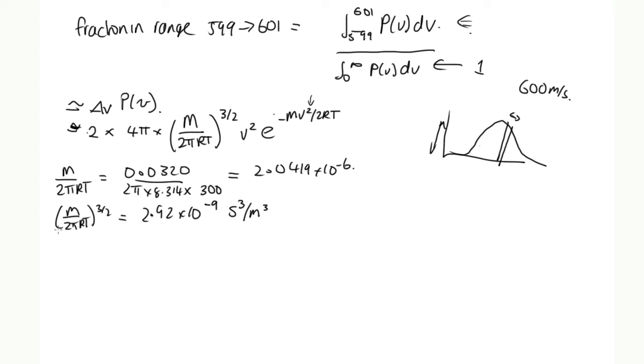And then let's work out what this term is. So mv squared over 2rt, that is equal to 0.0320 times 600 squared over 2 times 8.314 times t, which is 300. So that is equal to 2.31 solving it on the calculator.